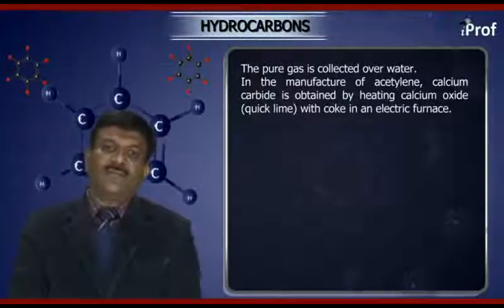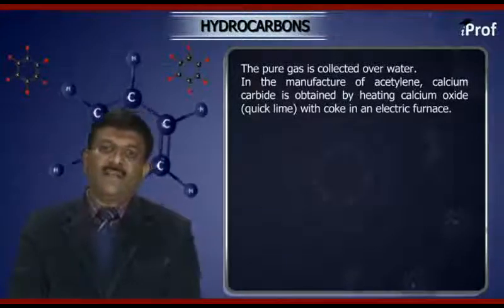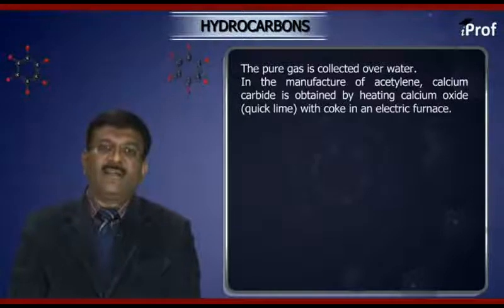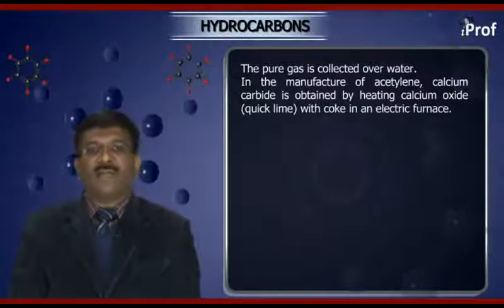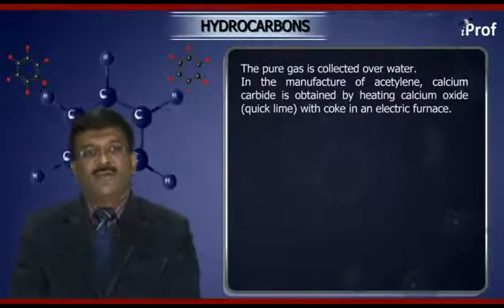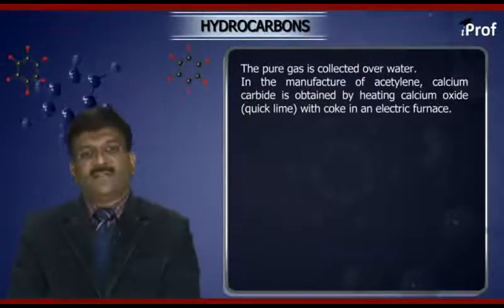In the manufacture of acetylene, calcium carbide is obtained by heating calcium oxide (quick lime) with coke in an electric furnace.